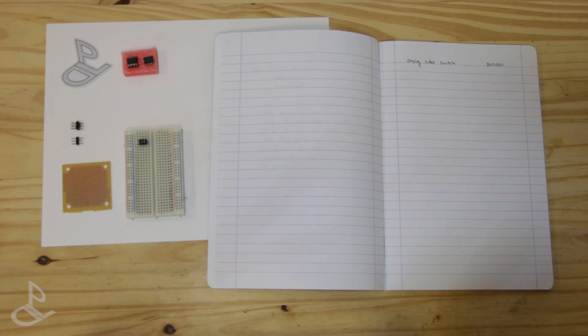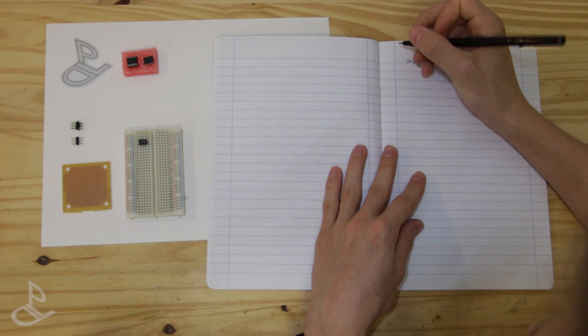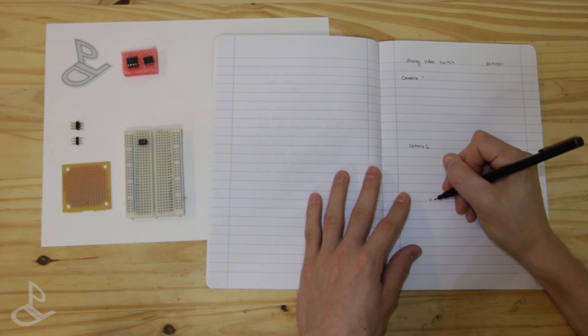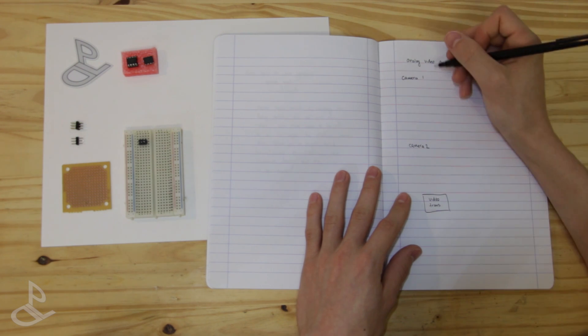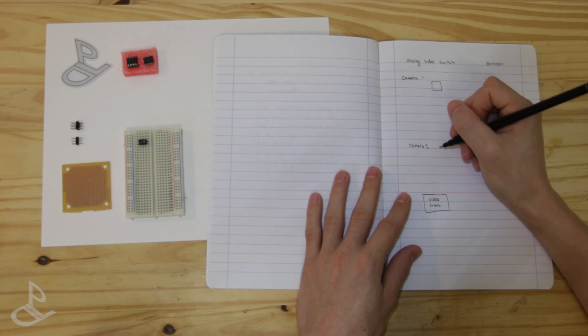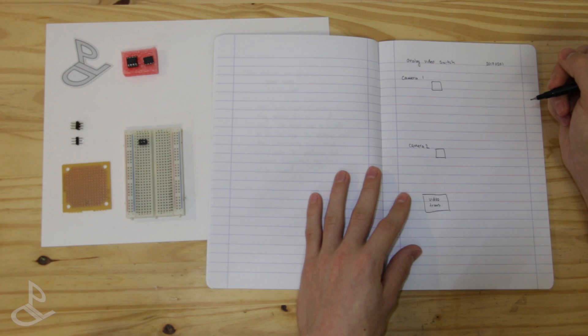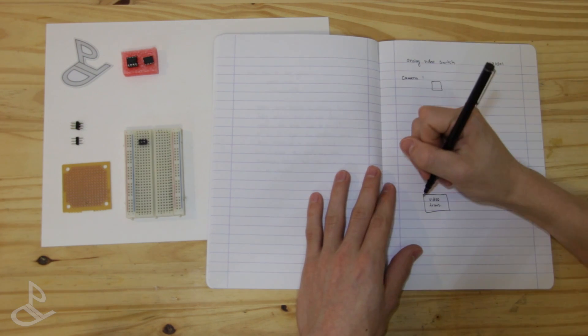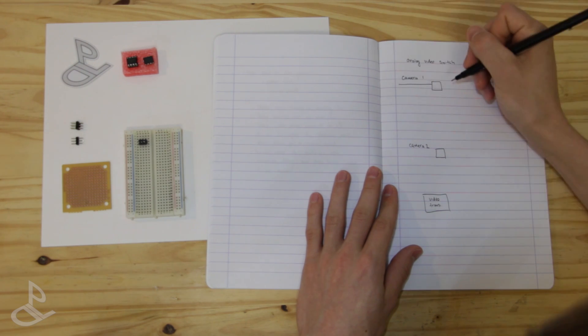Alright, so I am going to draw somewhat of a schematic so you guys can see visually how this works and then we will get to it. So, it is pretty simple. We have our camera one here and then our video transmitter here. So, I am going to draw the positive. They both have a common positive and negative that go to the video transmitter. So, I am just going to draw that on this side.